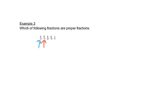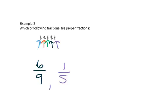Which of the following are proper fractions? Looking at 4 over 1 — the top number is bigger, so it's improper. 9 over 7 — the top number is bigger, so it's improper. 6 over 6 is also not proper because the top number is not smaller than the bottom. 6 over 9 is proper because the top is smaller. And 1 over 5 is also proper. So we end up with two proper fractions.